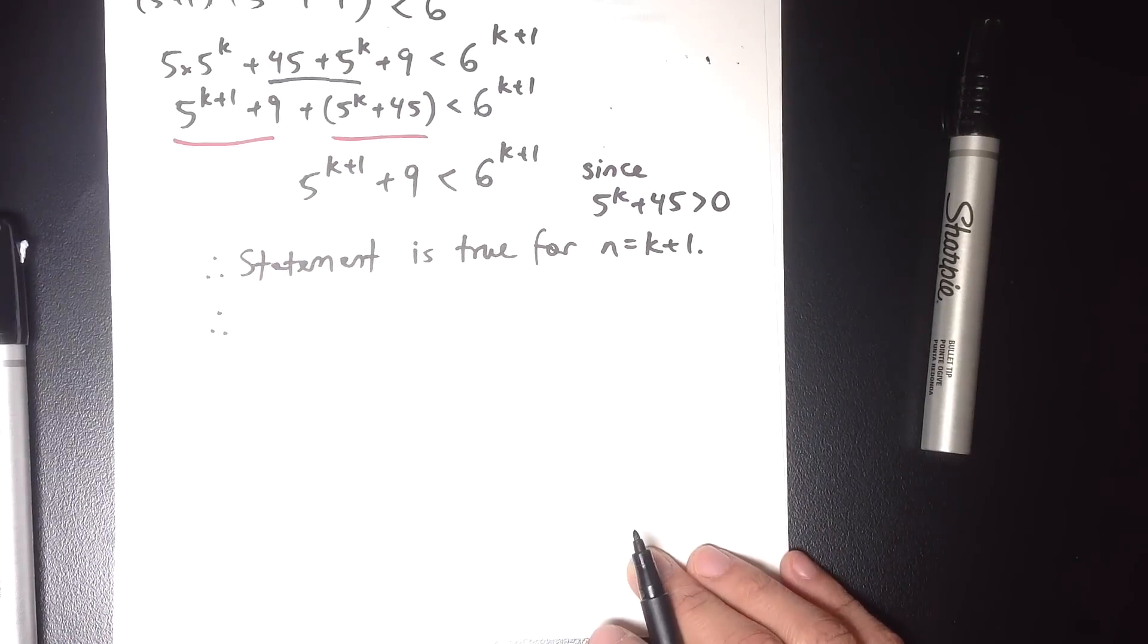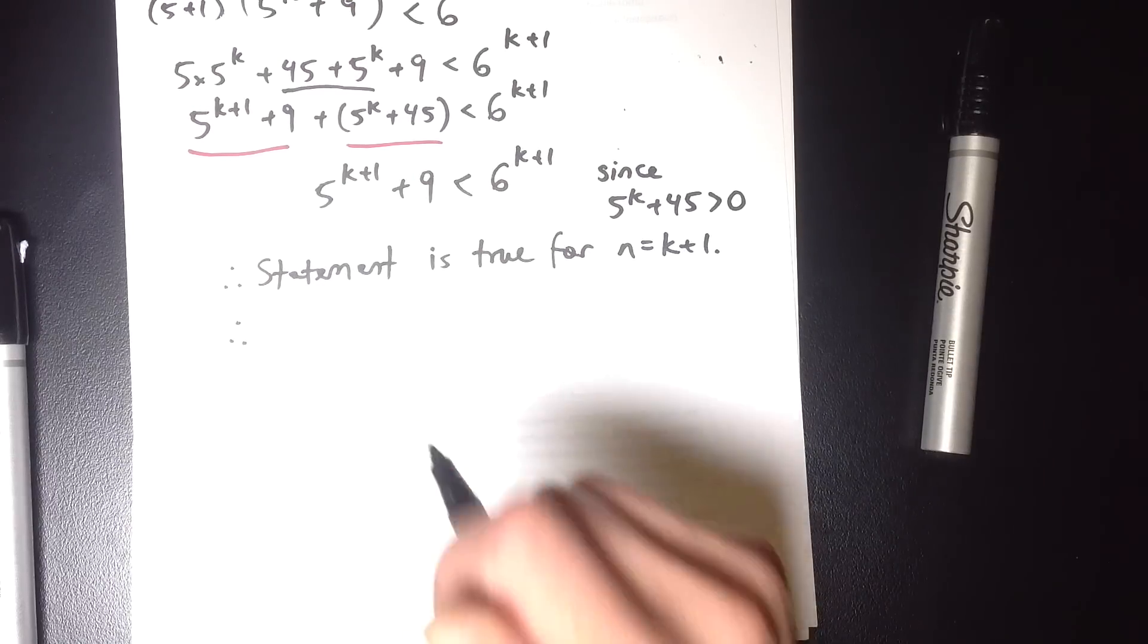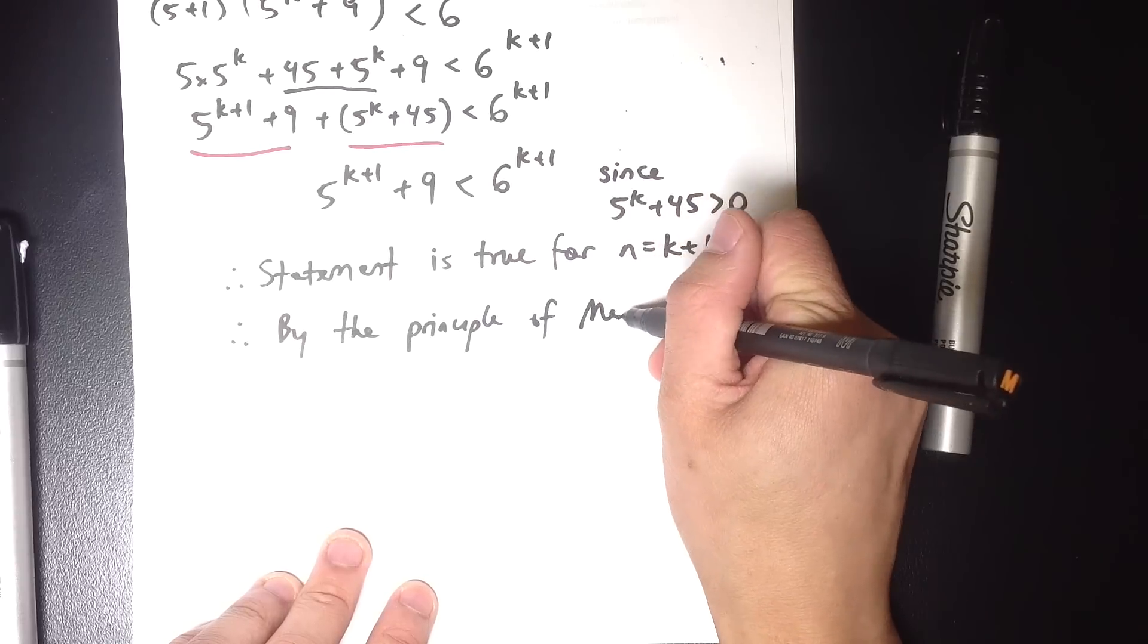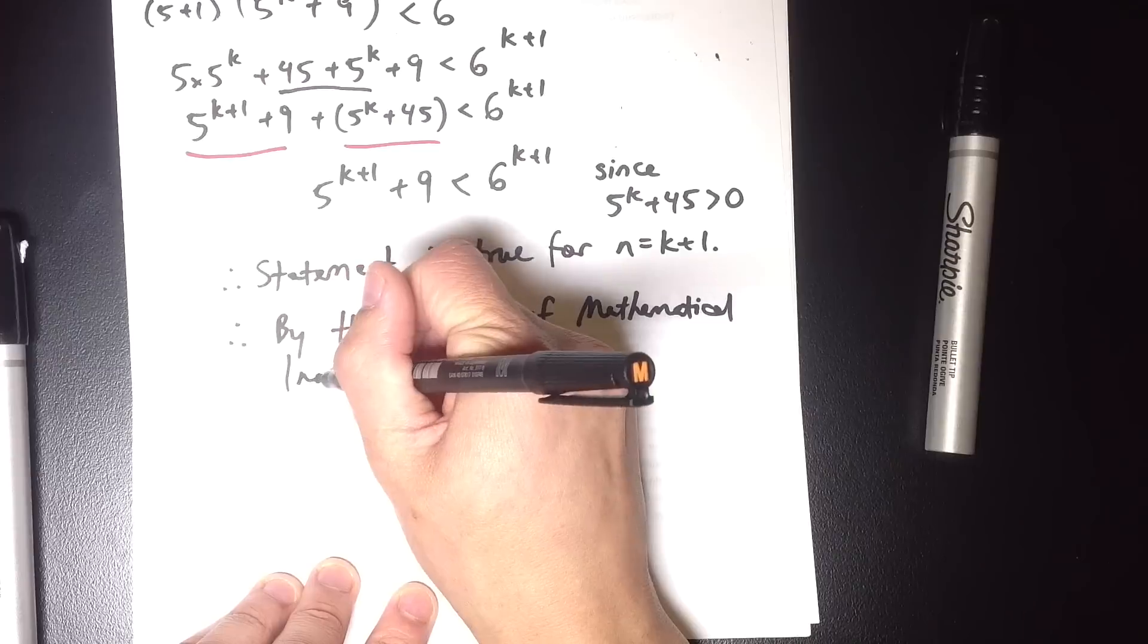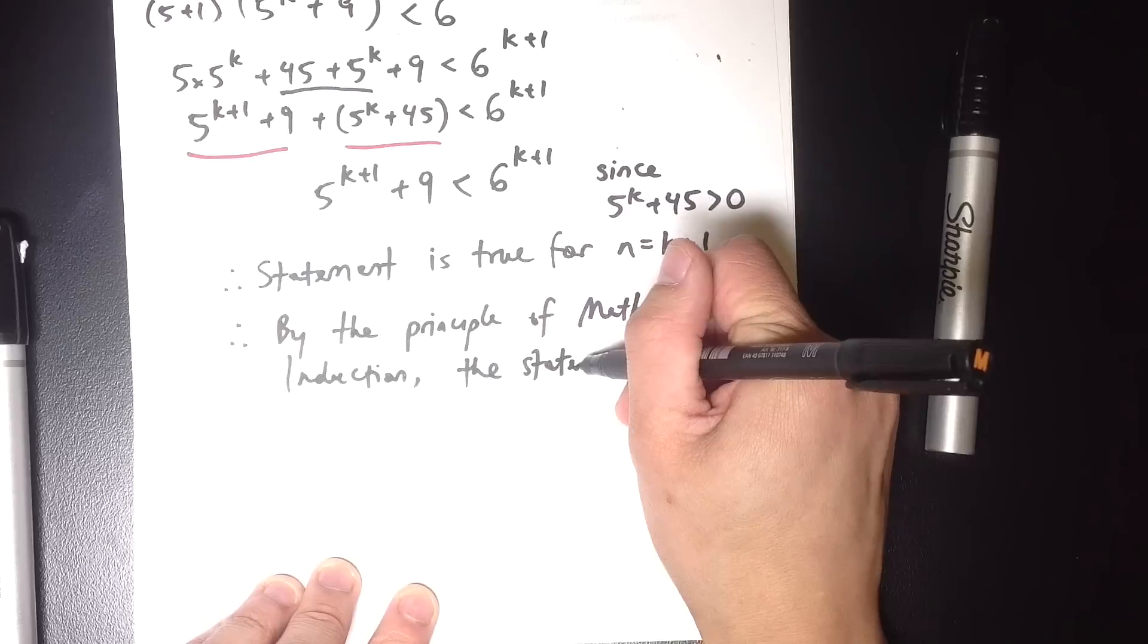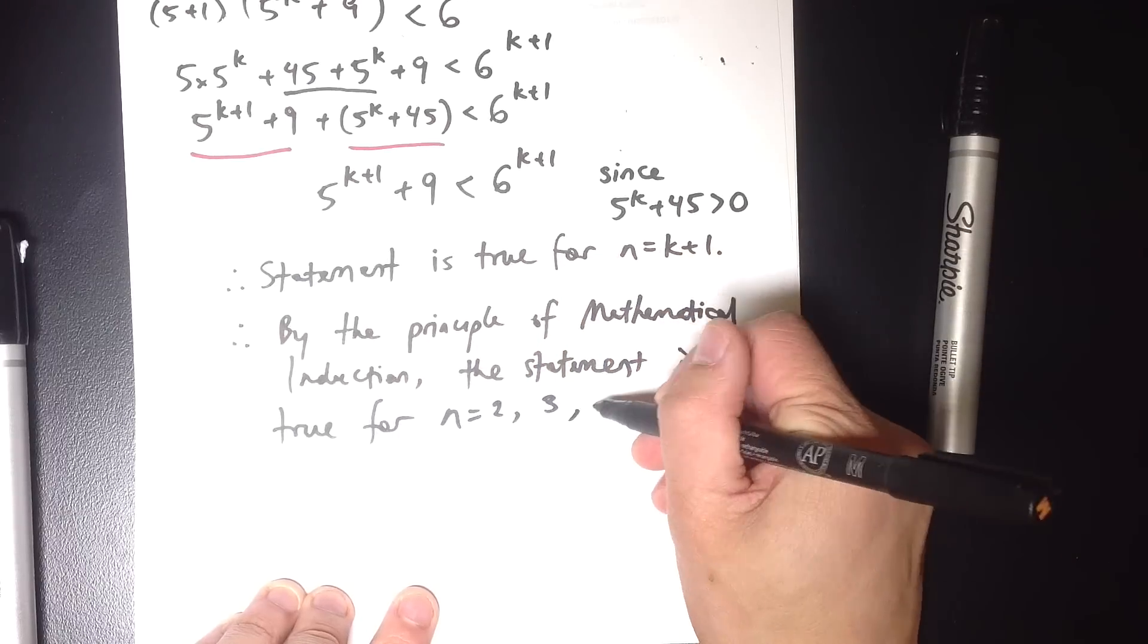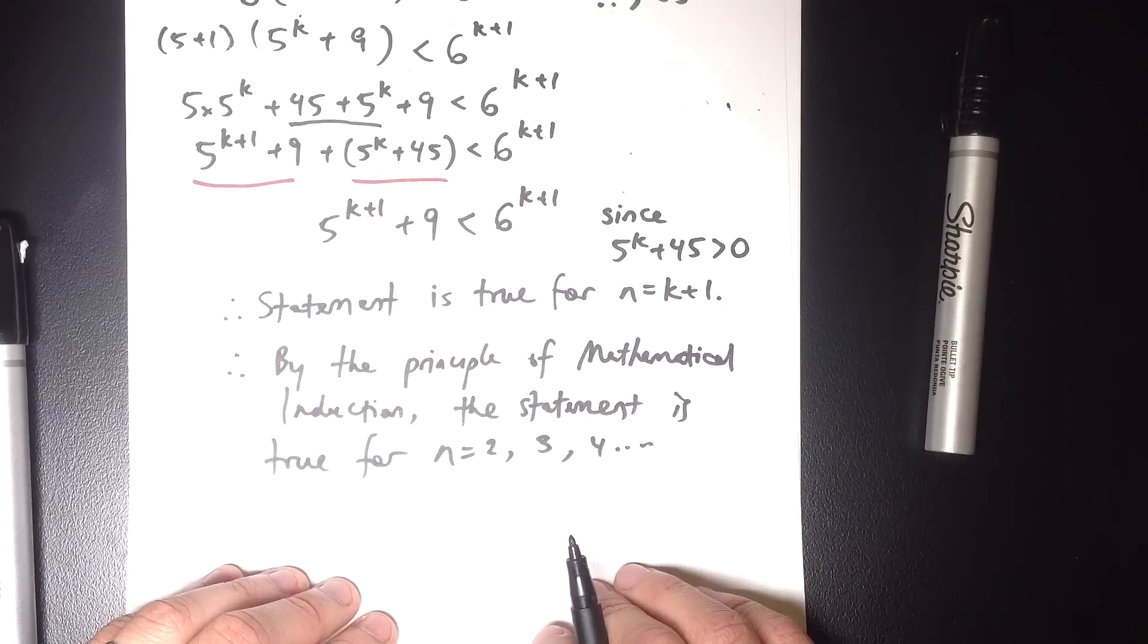So therefore, and different places, different schools, universities will word their conclusion a little bit differently. But you might just say, by the principle of mathematical induction, the statement is true for your first value, which we said was 2, and every subsequent one, which is all we needed to prove. That's it. That's the proof.